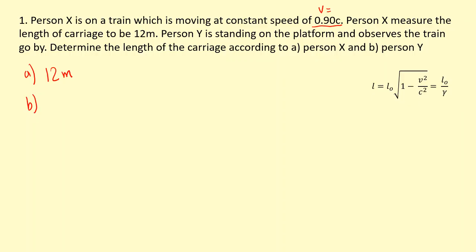It's going to appear length contracted. So let's work out gamma first. Gamma is going to be 1 over the square root of 1 minus 0.9 squared. Because this is a shortcut there, that's 2.294.